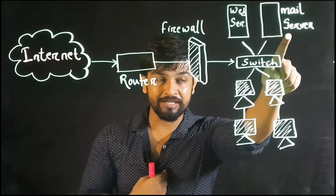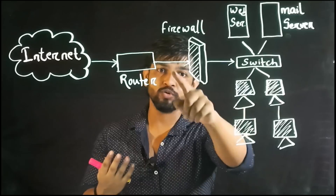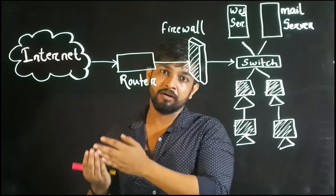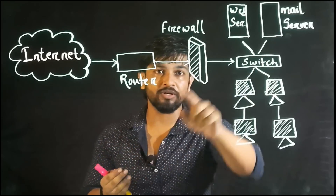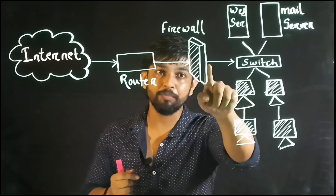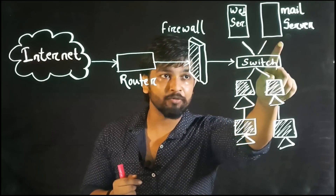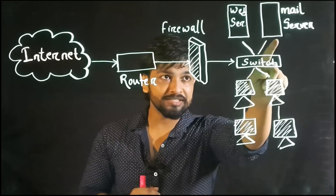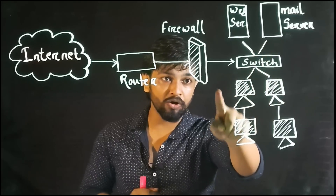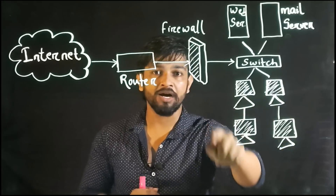Take myself as a malicious intender. I will send a mail — it will pass through the firewall because I have mailed something from an authorized mail ID. Or if I am doing any phishing attack, it will pass through the firewall. Then after passing through the firewall, it will go to the mail server. Once it goes to the mail server, there is no looking back — all the computers and systems are now vulnerable.